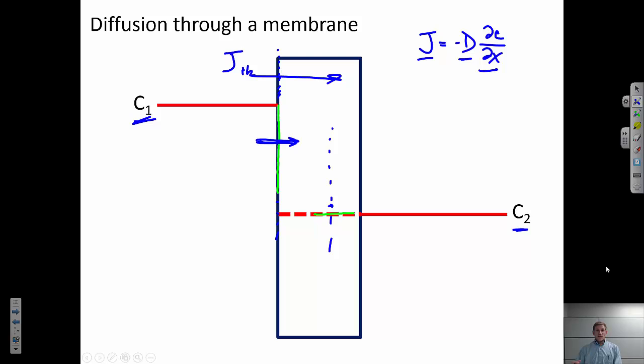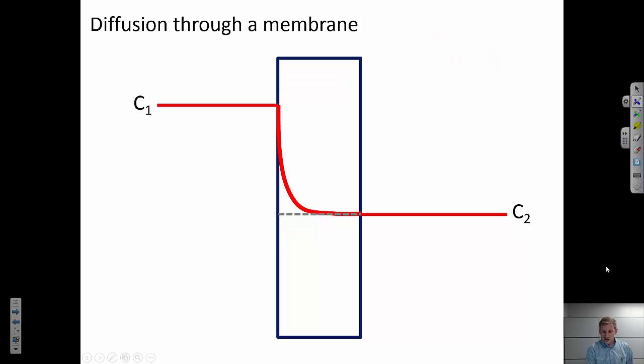So what that means is that if I let the system sit for some short period of time, I'm going to start increasing the concentration in this intermediate region. I have a high flux on the left side and a small flux on the right side. So the concentration in between those two is going to have to increase. So let's do this again.